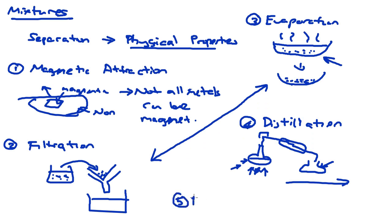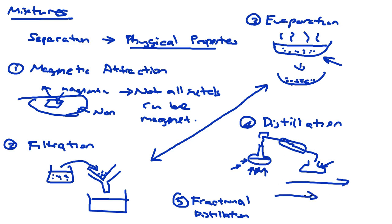A more complicated version of distillation is fractional distillation. This is used when you have more than two types of liquids. You again make use of different boiling points and a similar setup to heat the liquid to different boiling points. You use fractionating towers or columns to collect the different substances based on their different boiling points.